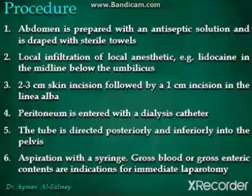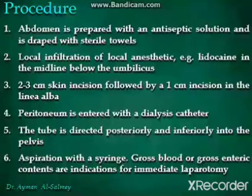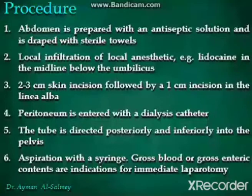For the procedure, the abdomen is prepared with antiseptic solution and draped with sterile towels. Local anesthetic like lidocaine is infiltrated in the midline below the umbilicus. A 2-3 cm skin incision is made followed by a 1 cm incision in the linea alba. The peritoneum is entered with a dialysis catheter directed posteriorly and inferiorly into the pelvis, then aspiration is performed with a syringe. Gross blood or gross enteric contents are indications for immediate laparotomy without further procedure.